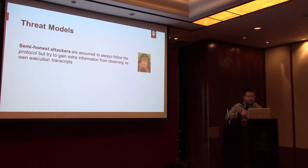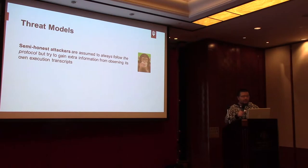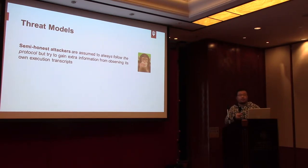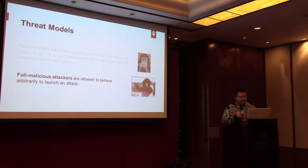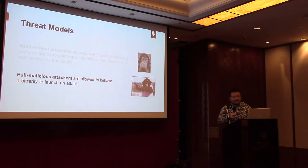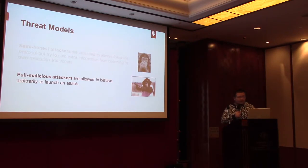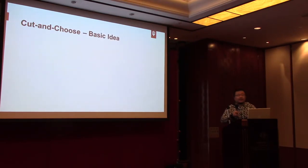There are two known security models. In the semi-honest model, the adversary is assumed to always follow the protocol, but tries to get extra information by observing its own transcripts. This model is quite weak because we cannot assume what an adversary can or cannot do. It is much more reasonable to move to the malicious model, where the adversary can do anything it wants — there is no assumption on the adversary's behavior.